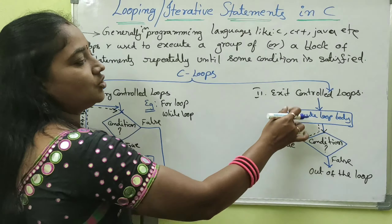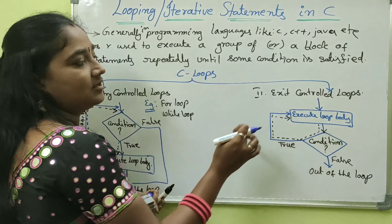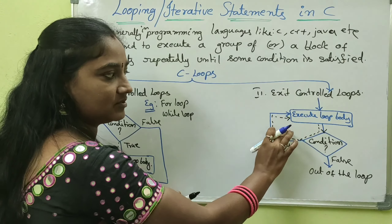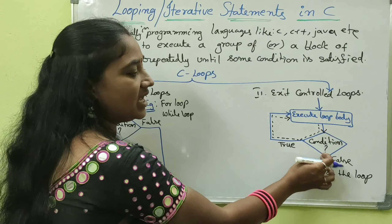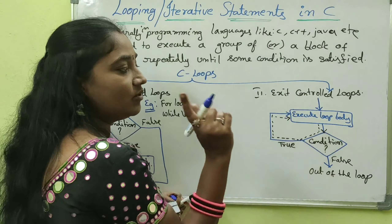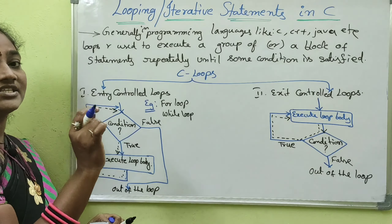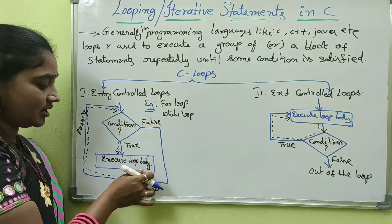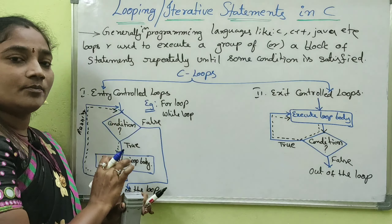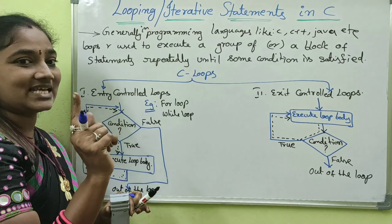The main difference is: in entry controlled loops, the condition is checked first. If the condition is false the first time, the body of the loop will not be executed at all. But in exit controlled loops, the loop body executes at least once, even if the condition is false initially.